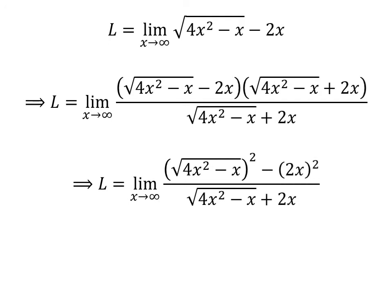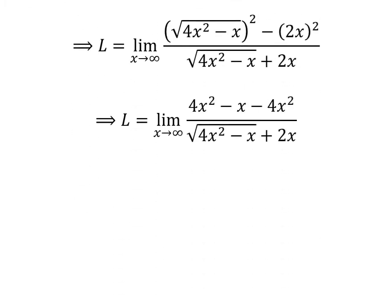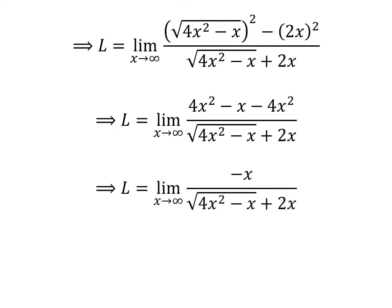In the above fraction, the numerator is in the form of a minus b times a plus b. So we can rewrite the numerator as the square of square root of 4 times square of x minus x, minus the square of 2 times x. Further simplification gives us the numerator as 4 times square of x minus x minus 4 times square of x, and L equals the limit of minus x upon square root of 4 times square of x minus x, plus 2 times x, as x approaches infinity.